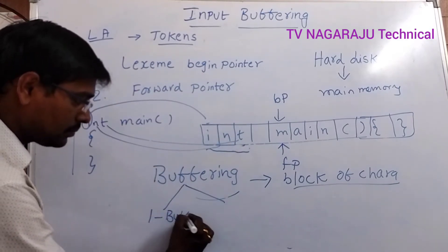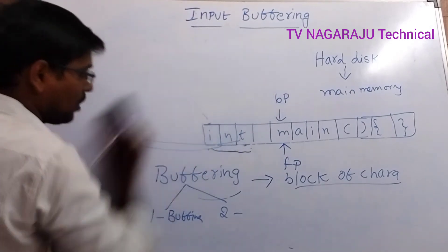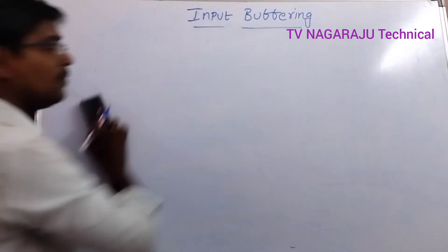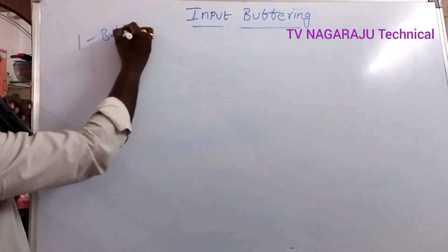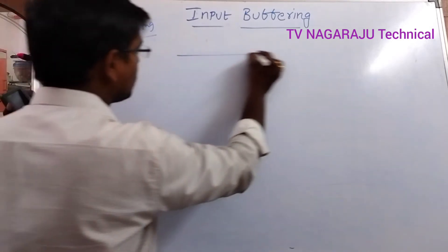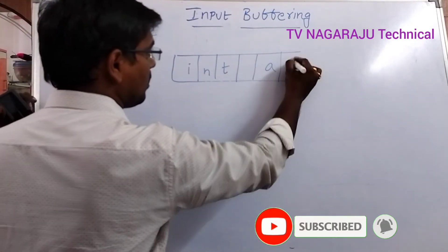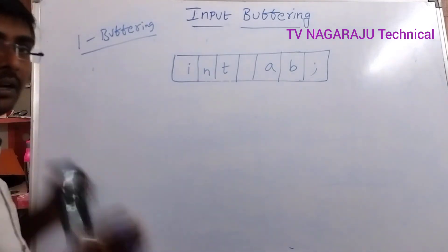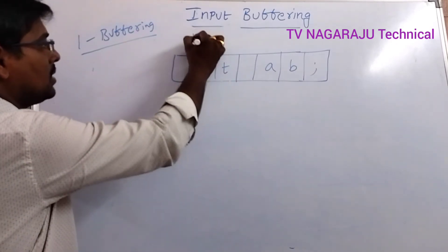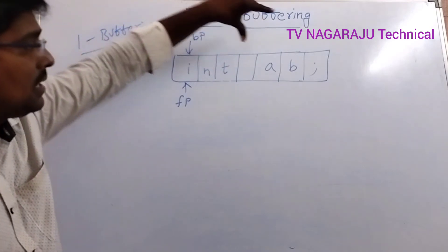In the one-buffer scheme, as the name specifies, only a single buffer is used to store the value. Suppose this is the single buffer containing a simple declaration like 'int A, B'. This entire input is read at a time into the buffer. The logic is the same: a begin pointer and forward pointer operate on it.